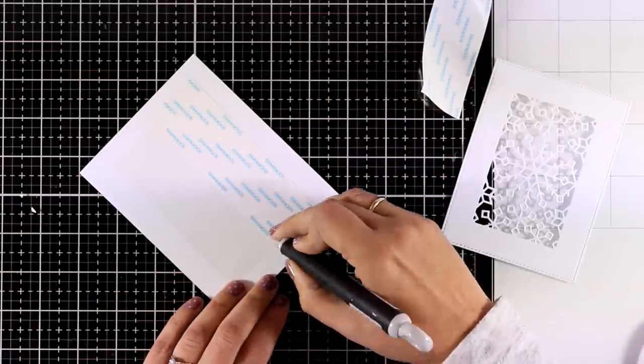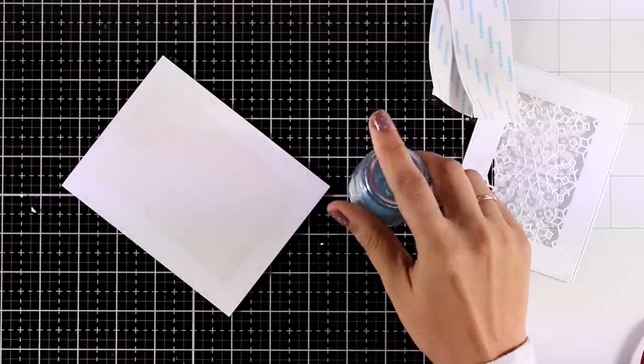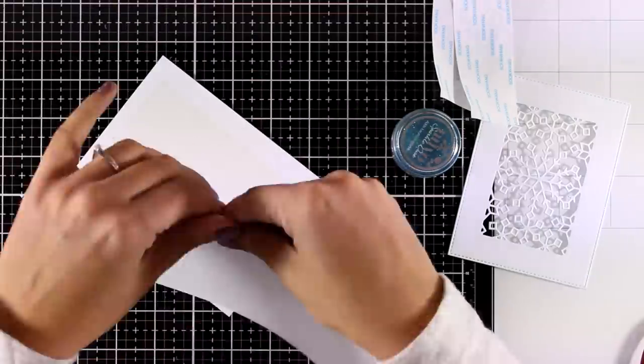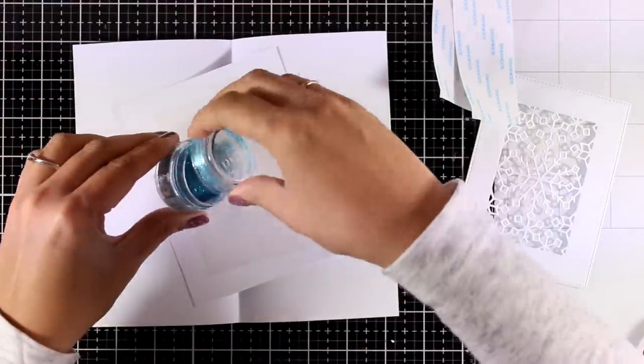I am going to peel off the backing and now on top I am going to apply very fine glitter. This is a product by Nouveau and it is called Sparkle Dust. It is a beautiful blue color and I am going to cover up completely that sticky area.